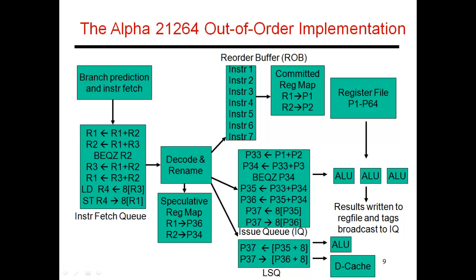In the last few videos, we designed this out-of-order pipeline. I'm going to touch upon one last topic of multi-threading before I move on to other aspects of the process, such as the memory hierarchy. This pipeline that we designed — if you look at your processor chip, all of this can be accommodated in a very small fraction of the total chip area, and this is referred to as a single core.